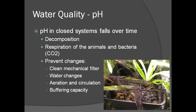The pH in systems that remain closed will drop over time from decomposition of organic matter and carbon dioxide production. This drift can be prevented by cleaning the mechanical filter and performing water changes regularly, by having good aeration and circulation of the water, and by including some type of buffering capacity such as calcium carbonate in the water.